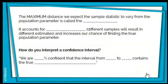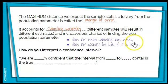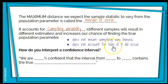The maximum distance that we expect a sample statistic to vary from the population parameter is what we call the margin of error. It accounts for sampling variability — the fact that different samples will result in different estimates — and it increases our chance of finding the true population parameter. It does not mean that our sampling method was biased, and the margin of error does not account for any bias if it did occur. If there was a bias, sampling variability does not fix it.